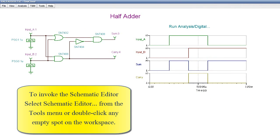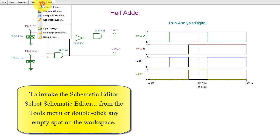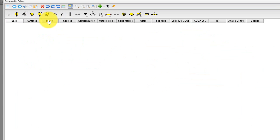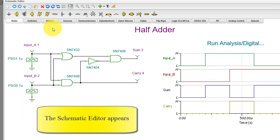To invoke the schematic editor, select Schematic Editor from the Tools menu or double-click any empty spot on the workspace. The schematic editor appears.